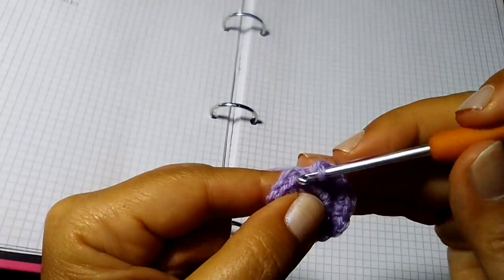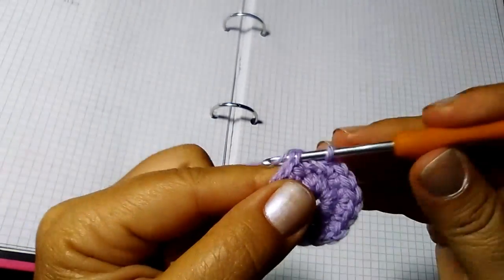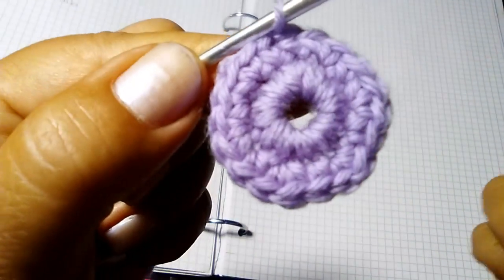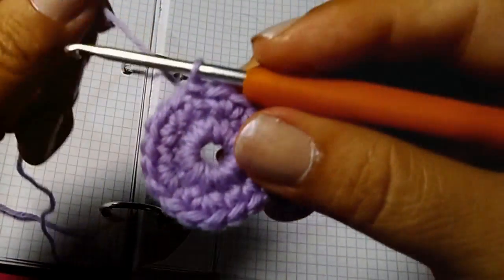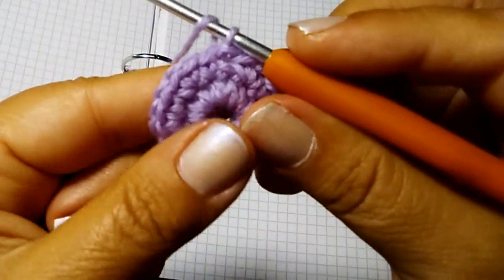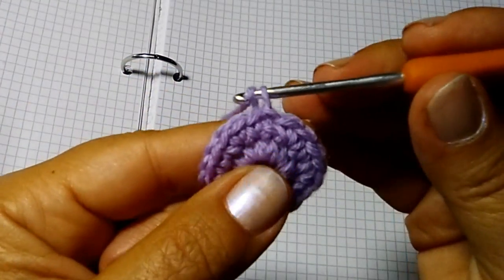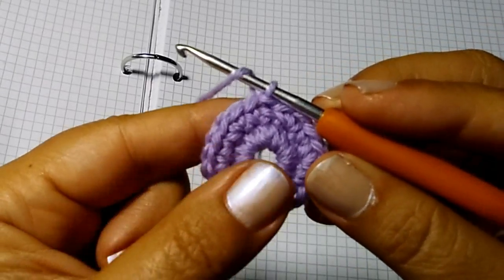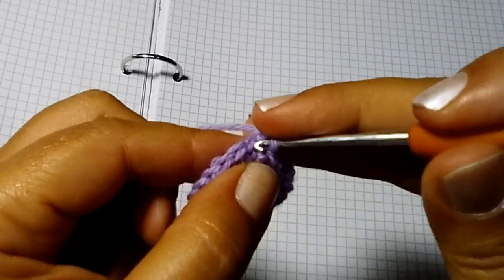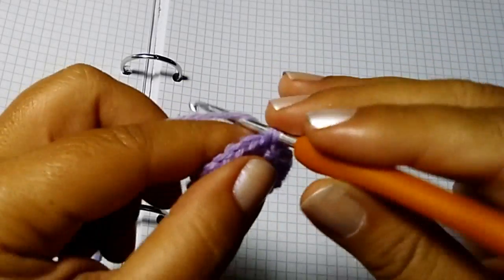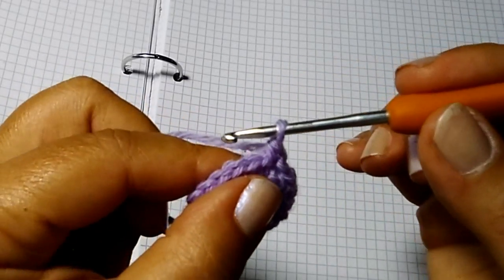Chiudo questo giro con una maglia bassissima nella prima maglia bassa d'inizio giro. Allora pronti per il prossimo giro: una catenella, rientro nella prima maglia e faccio una maglia bassa.